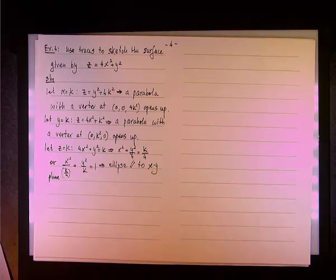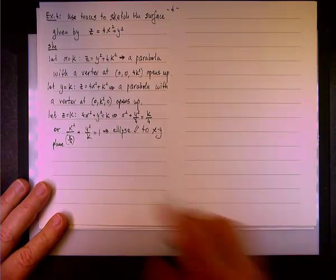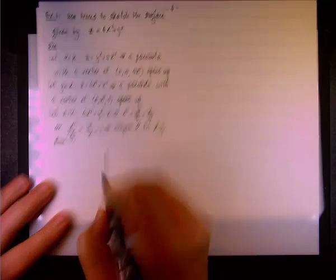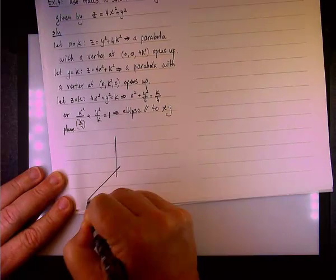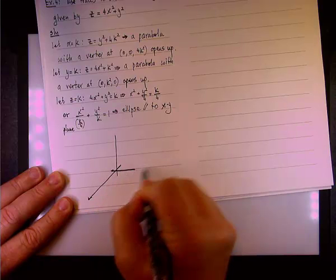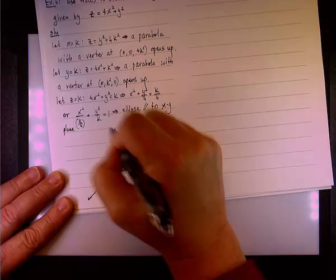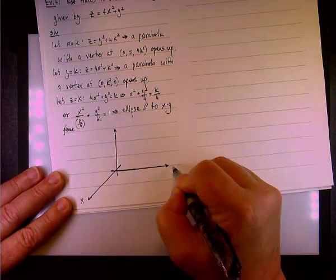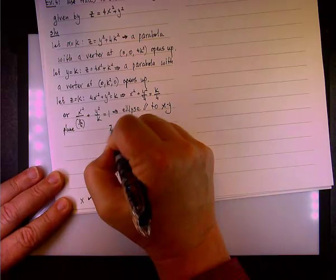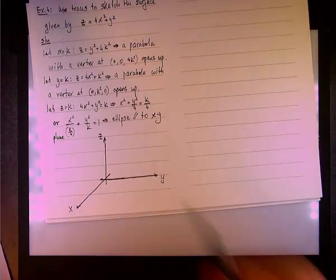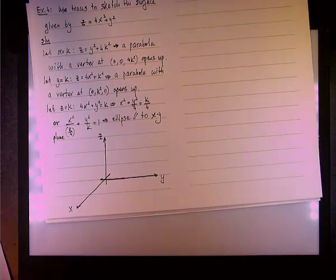So we have two traces that are parabolas, and one trace, and the result is an ellipse. We call this creature elliptic parabola. And how we graph it, or sketch it? Let's attempt to sketch it. Not attempt, let's sketch it.